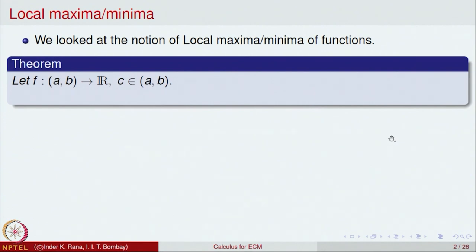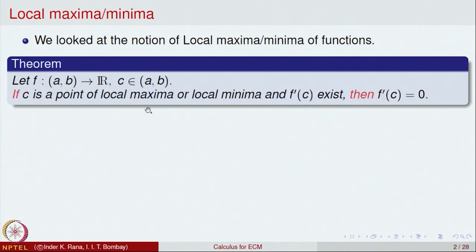Let us start recalling our previous lecture. In the previous lecture, we had started looking at the properties of local maxima and minima for functions of one variable. In particular, we looked at the following theorem: if f is a function defined on an open interval (a,b) and c is a point in that open interval which is a point of local maxima or local minima, then f'(c) exists and f'(c) is equal to 0.